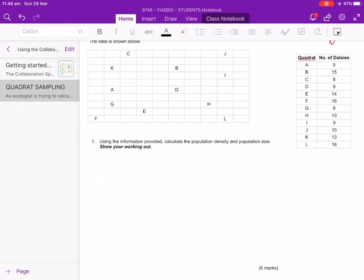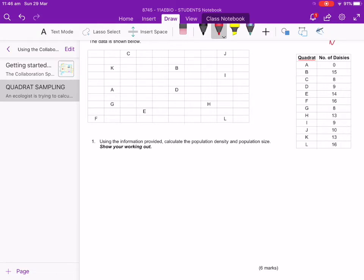So the first thing we want to do is start off by calculating our population density. I will provide you with a data sheet that gives you some of these equations. Population density is going to be equal to your number of individuals divided by the area that you sampled. And it's important that you realize that it is the area that is sampled, not the total area.